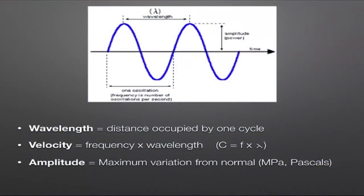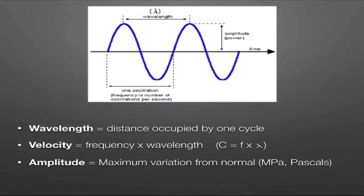There are a few parameters you should be aware of that we use to describe sound waves. The first is wavelength — the distance occupied by one cycle of a compression and a rarefaction. We can determine this wavelength if we know the velocity and frequency using the simple equation: velocity equals frequency times wavelength.